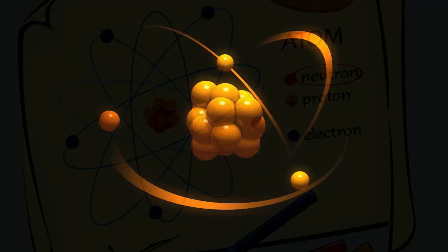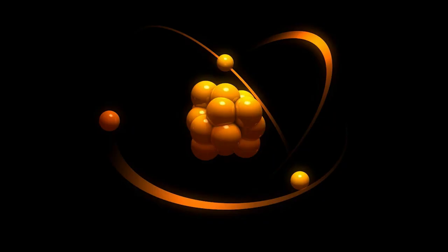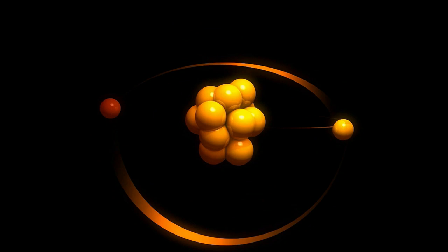Orbiting the nucleus of an atom is a cloud of negatively charged particles called electrons. The electrons are much smaller in mass than the protons and neutrons.